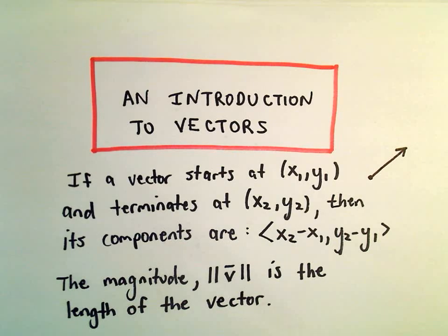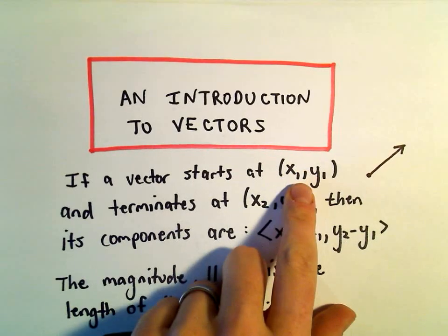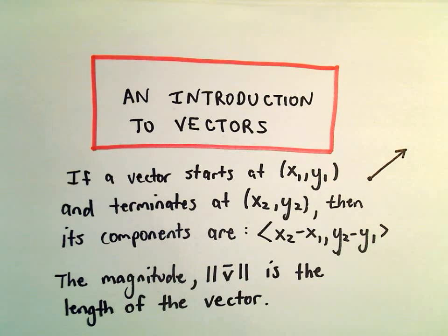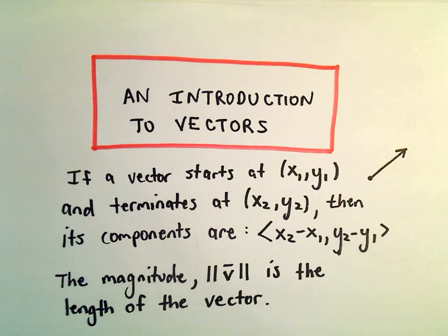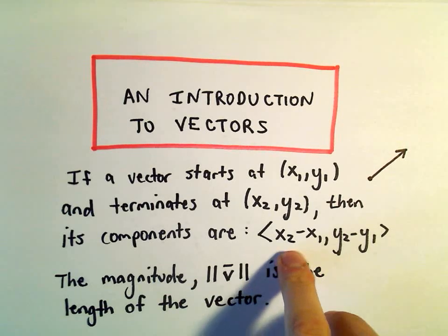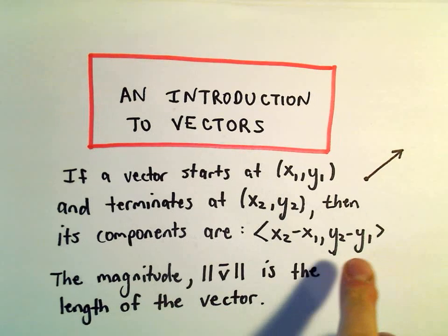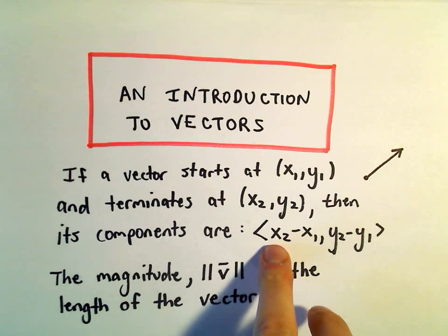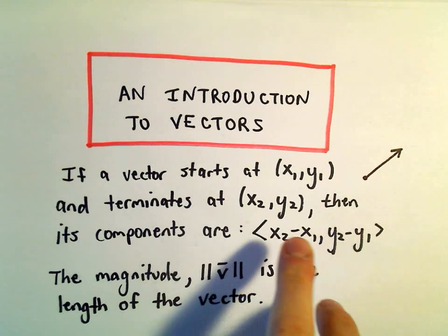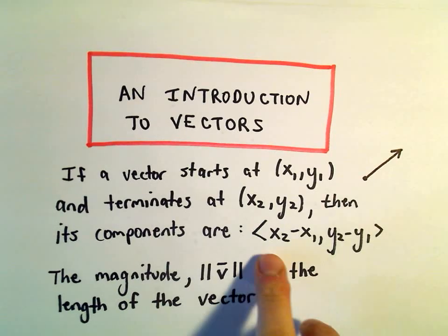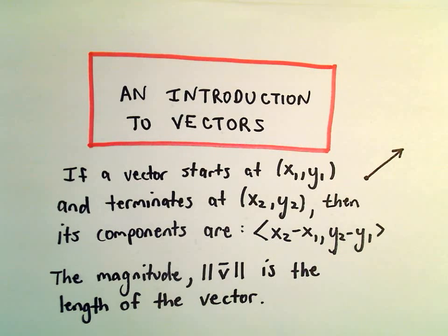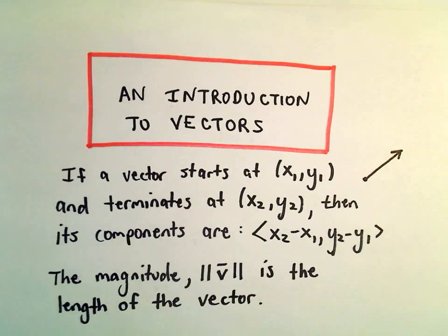Here we're going to talk about components and magnitude. So if a vector starts at the point x1 comma y1 and terminates at x2 comma y2, then to get its components we just simply subtract the x coordinates and we subtract the y coordinates. The order is very important, you have to take the finishing point minus the starting point for both the x and the y coordinates, and we put these in a little bracket or little arrows when we write them.